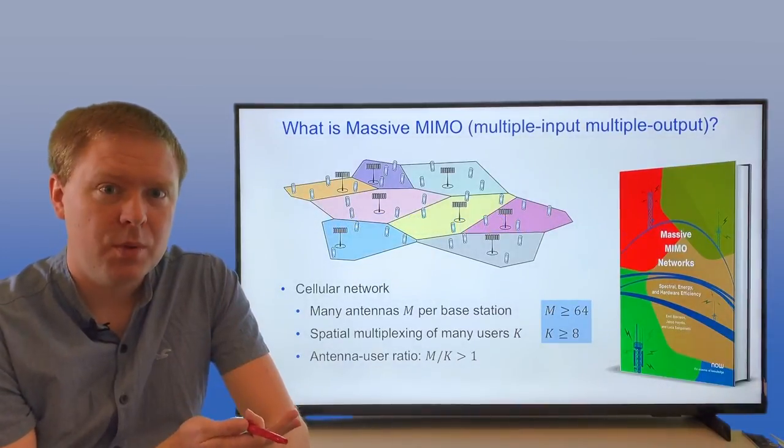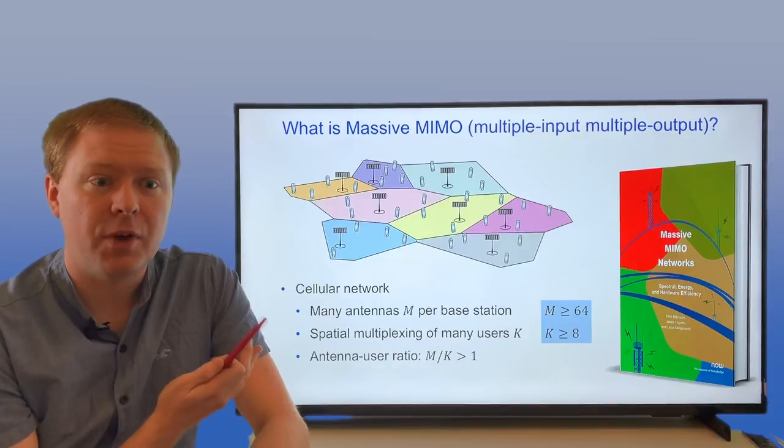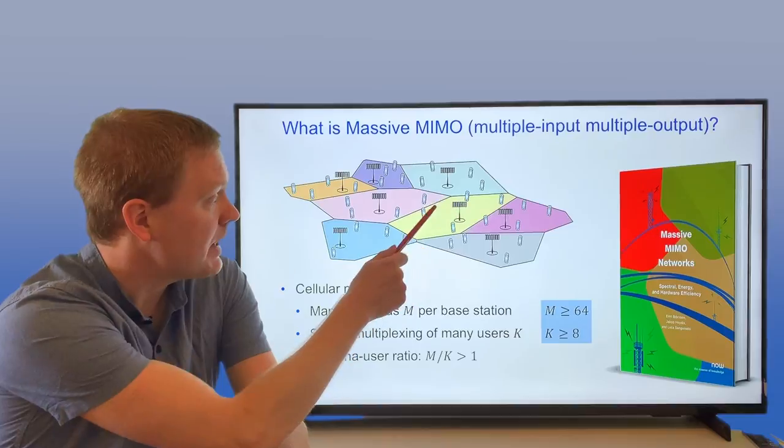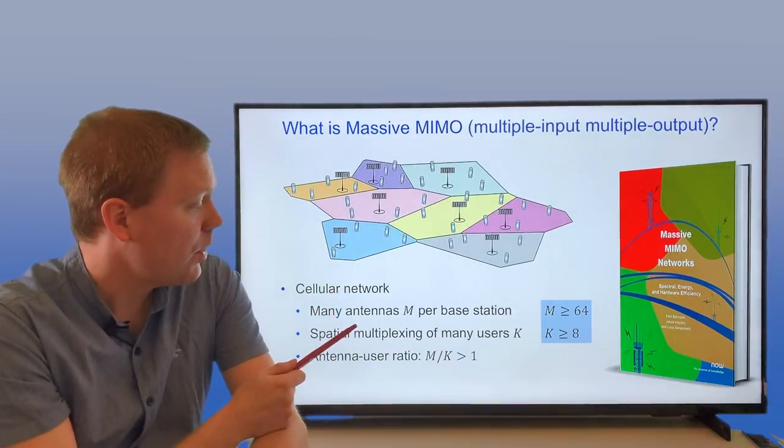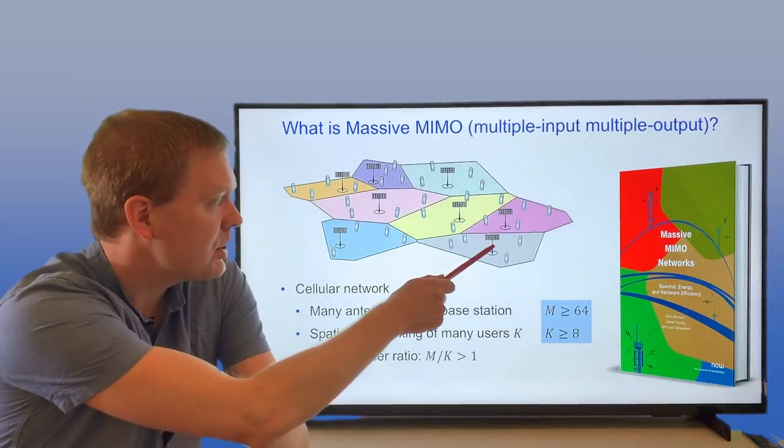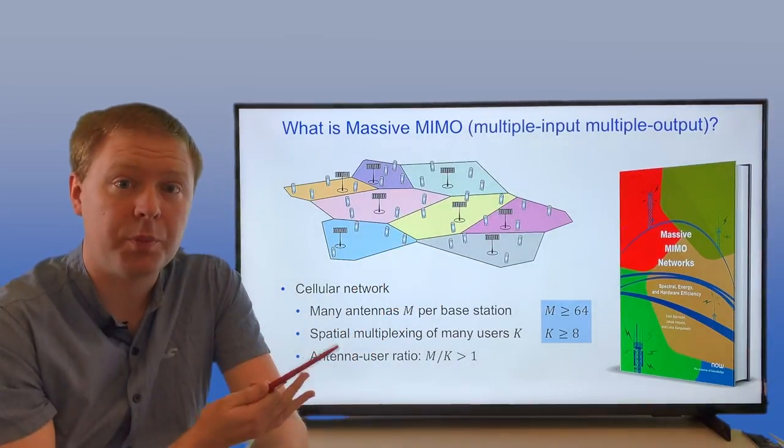What is Massive MIMO? Massive MIMO is the latest version of cellular network technology to send data from base station to users. The idea is that you divide the world into cells, and at each base station you have multiple antennas.